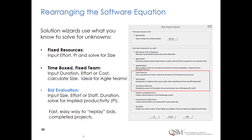Early estimates often require combining what we know — often very little — with reasonable assumptions about what we don't know. The software production equation can be rearranged to provide different estimation approaches: fixed resources determines how much functionality or scope over a given time; bid evaluation calculates the productivity needed to build certain functionality within a certain time and effort, used to determine feasibility of bids and benchmarking; time-boxed fixed team calculates the delivered size given a specified amount of time, effort, and productivity.